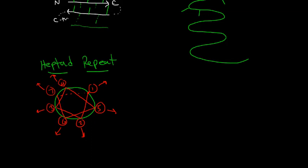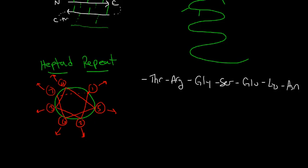For the first example, let's think about: threonine, arginine, glycine, serine, glutamic acid, lysine, and asparagine. If these are part of an alpha helix, we can predict what the exterior will look like: threonine at position one, arginine at two, glycine at three, serine at four, glutamic acid at position five, lysine at position six, and asparagine at position seven.